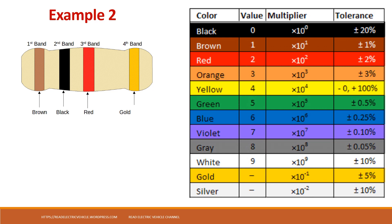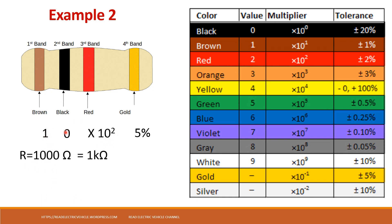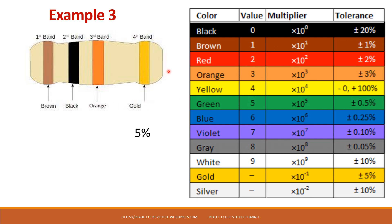Let us take a second example. Here the combination is brown, black, and red as the third multiplier band. Brown-black gives a value of 10. Red means 10 power 2, which equals 100. So the resistance is 10 multiplied by 100, which is 1000 ohms. And 1000 ohms is nothing but 1 kilo ohm.